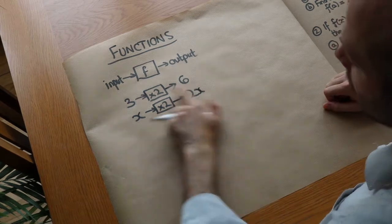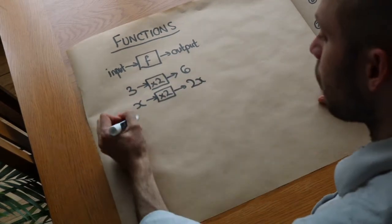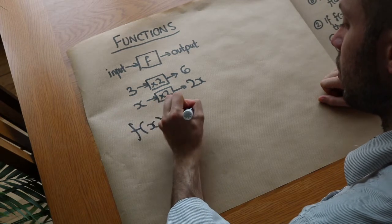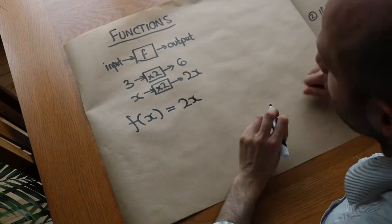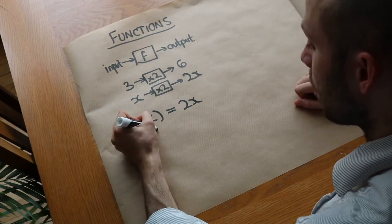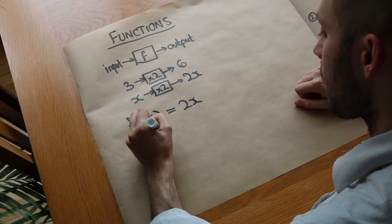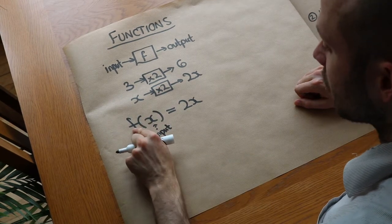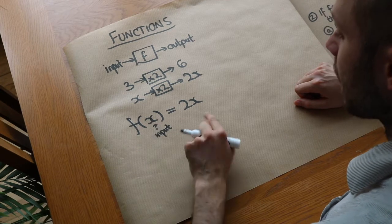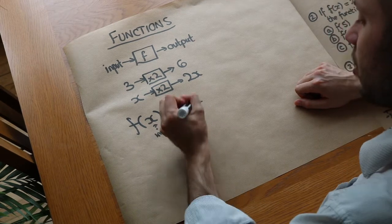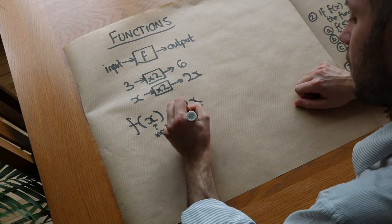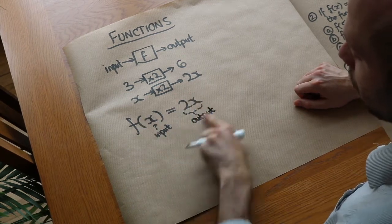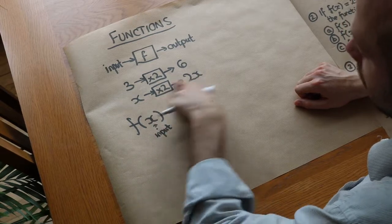Now we have a notation for expressing functions like this, and the way we write it is: f of x is equal to 2x. Here's what's going on — we've got x as the input, and then we're saying we're going to apply the function f to the input, and that's going to output 2x. So this is our output expression, and that's how we would formally write this number machine.